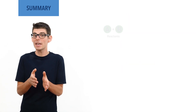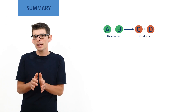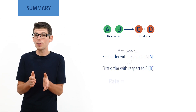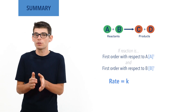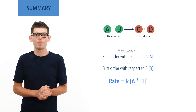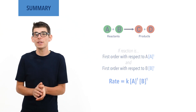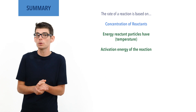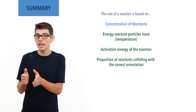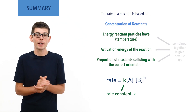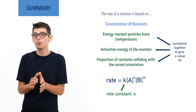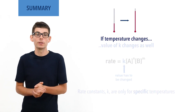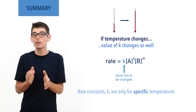For example, for a reaction A plus B forming products C plus D, if the reaction is first order with respect to A and first order with respect to B, then the rate equation would be: rate equals rate constant K multiplied by concentration of A to the power of 1, multiplied by concentration of B to the power of 1. The rate of a reaction is based on concentrations of reactants as well as temperature, activation energy, and the proportion of collisions between particles with the correct orientation. The rate constant K in the rate equation accounts for these other factors. As a result, its value is for a given temperature and activation energy only, and if the temperature of a reaction is changed, its rate constant K also changes. The rate constant K can have different units for different reactions.